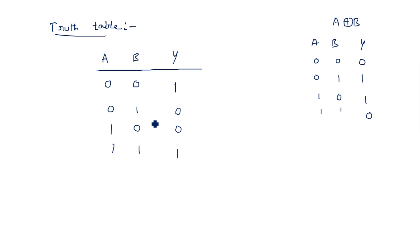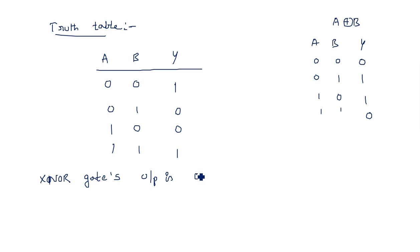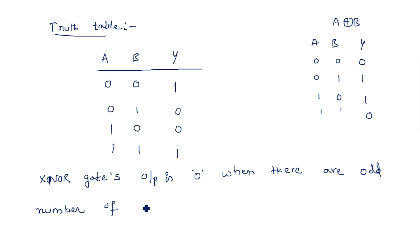From the truth table we can state the XNOR operation: when there are an odd number of ones in the inputs, the output is 0; when there are an even number of ones (including zero ones), the output is 1. So XNOR output is logic 0 when there are odd number of ones, and output is 1 otherwise.